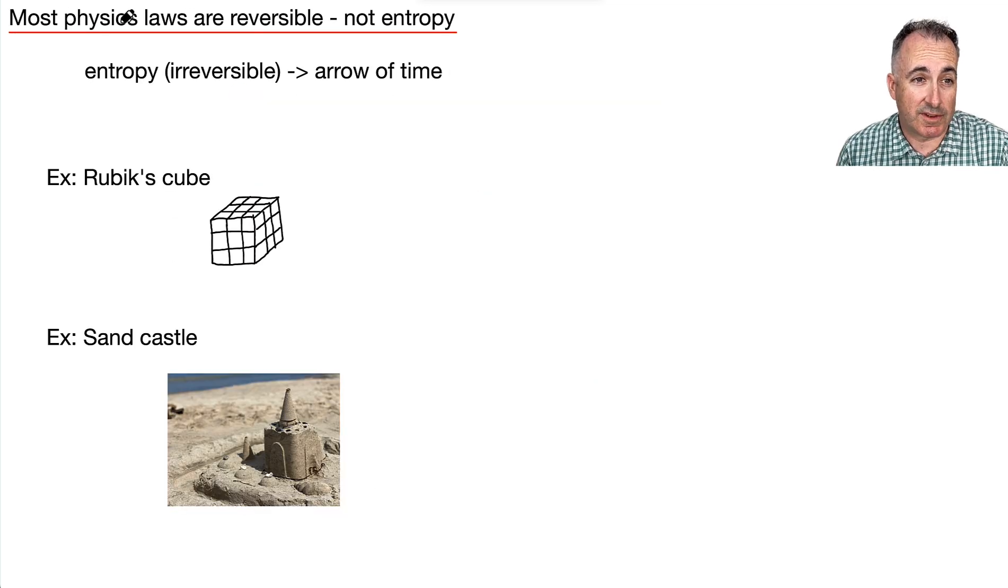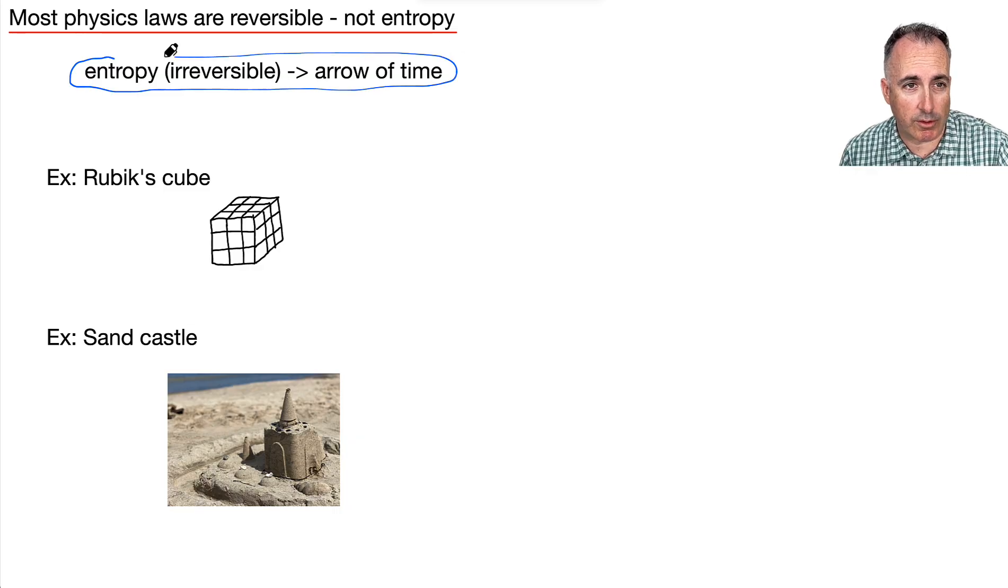So again, just to reiterate, most physics laws are reversible. For example, energy, motion or acceleration, things like that. Lots of things are reversible. But not entropy. It seems it goes one direction. So because of that, some people think that entropy then must be related to the arrow of time.